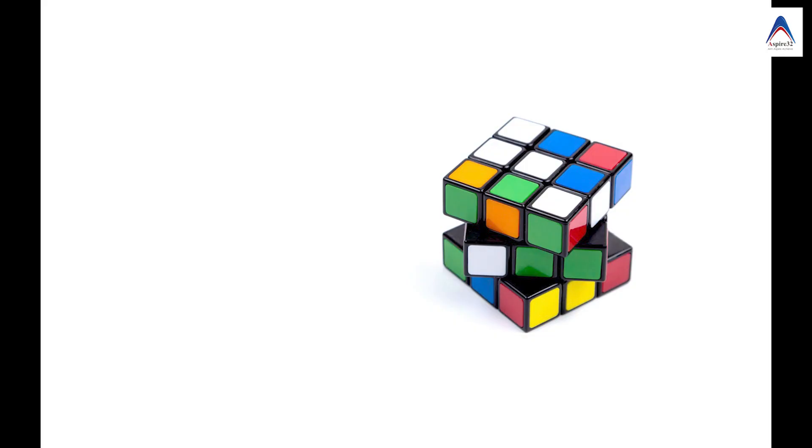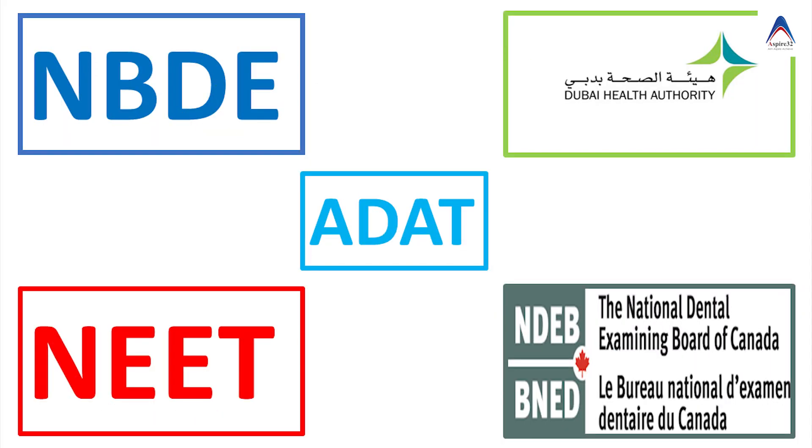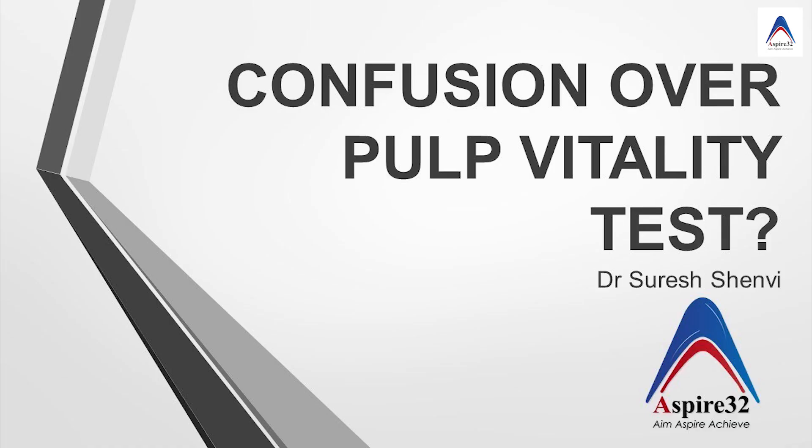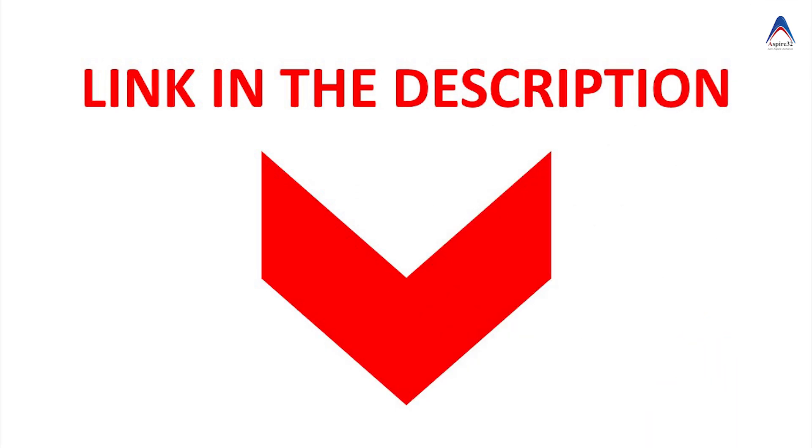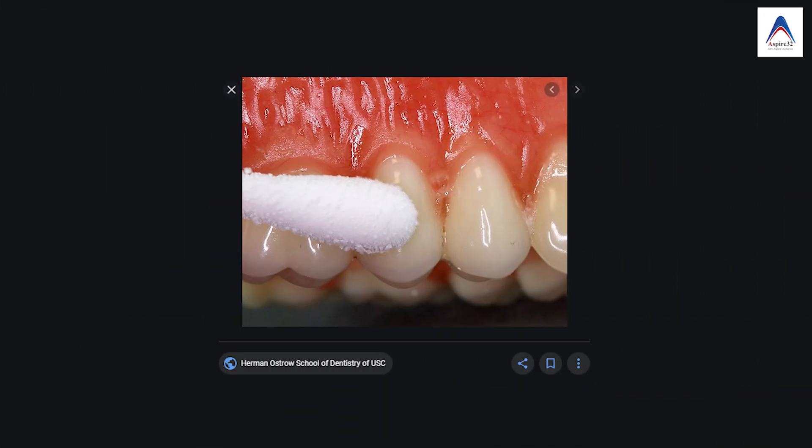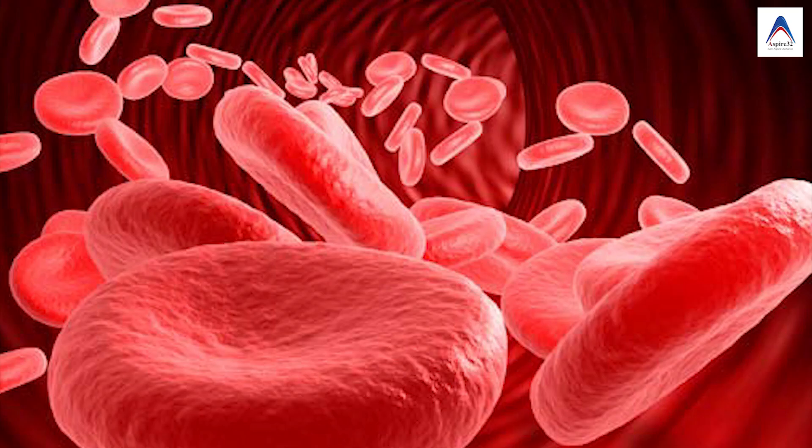One of my viewers has asked me about laser Doppler flowmetry and I too feel that it is really difficult. Now why do exams ask you about laser Doppler flowmetry and pulse oximetry so often? For that you have to check my old video where I told you about the disadvantages of conventional pulp vitality tests, that is electric and thermal, because they check the nerve response rather than the blood supply of the pulp. The real vitality would be the blood supply rather than the nerve supply.